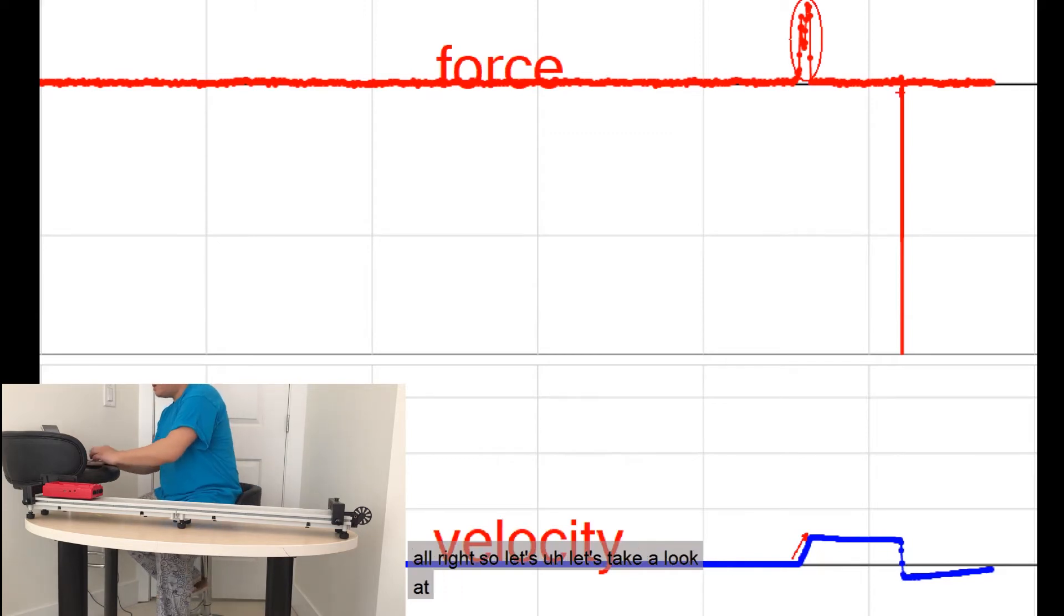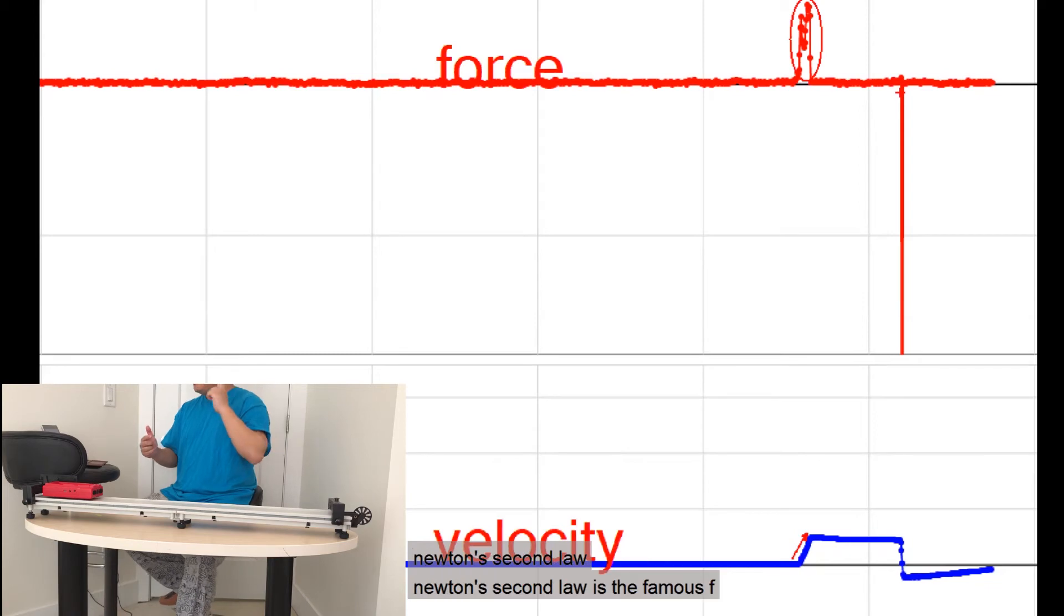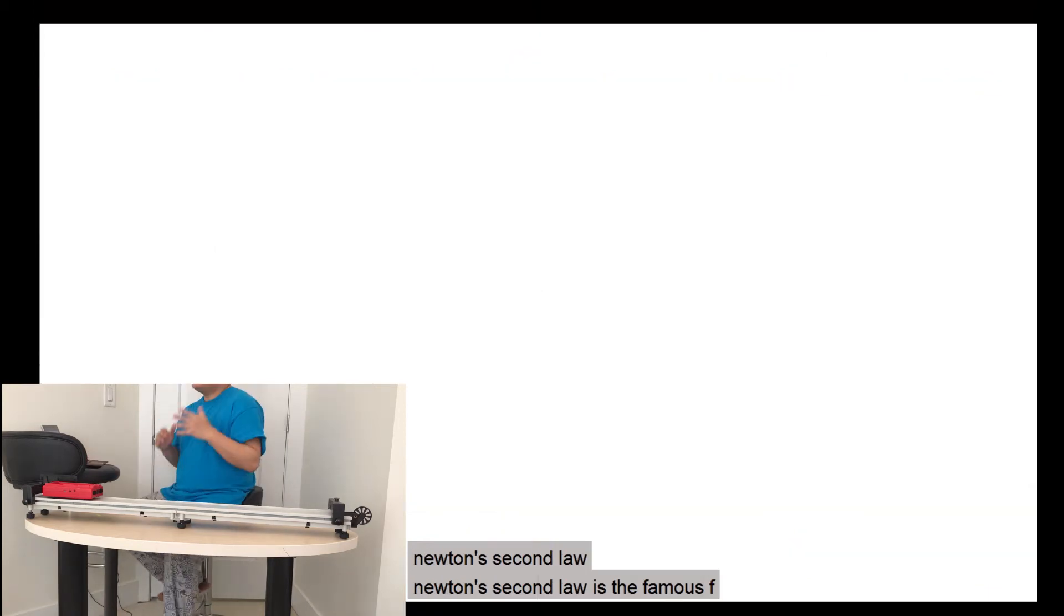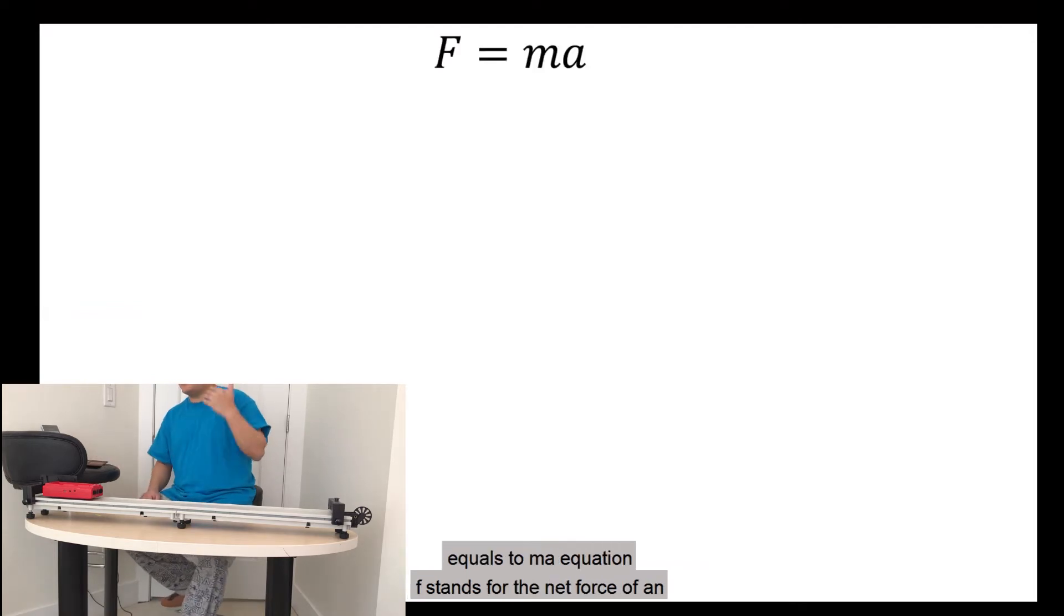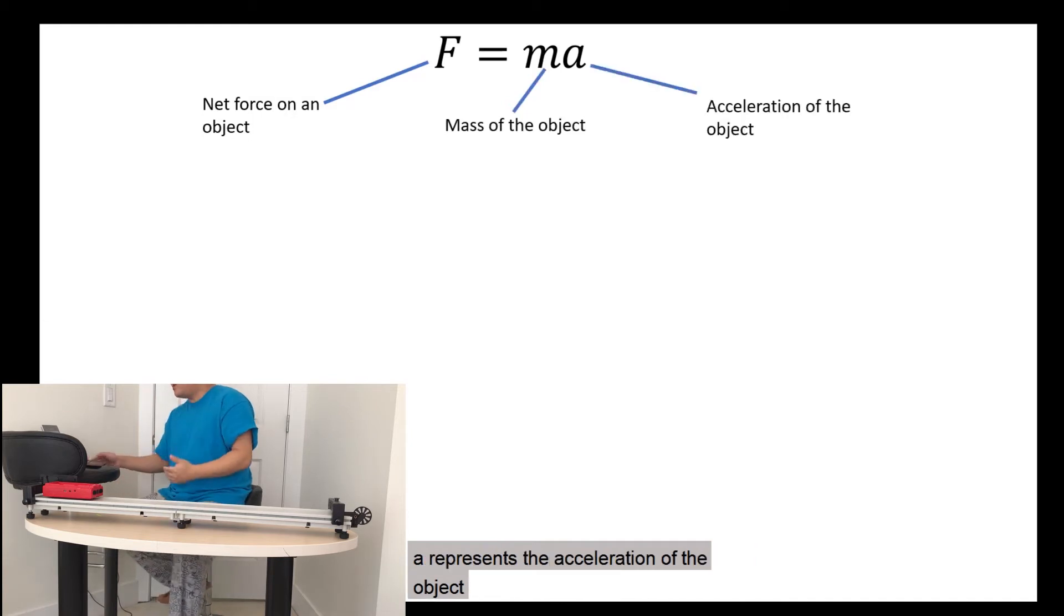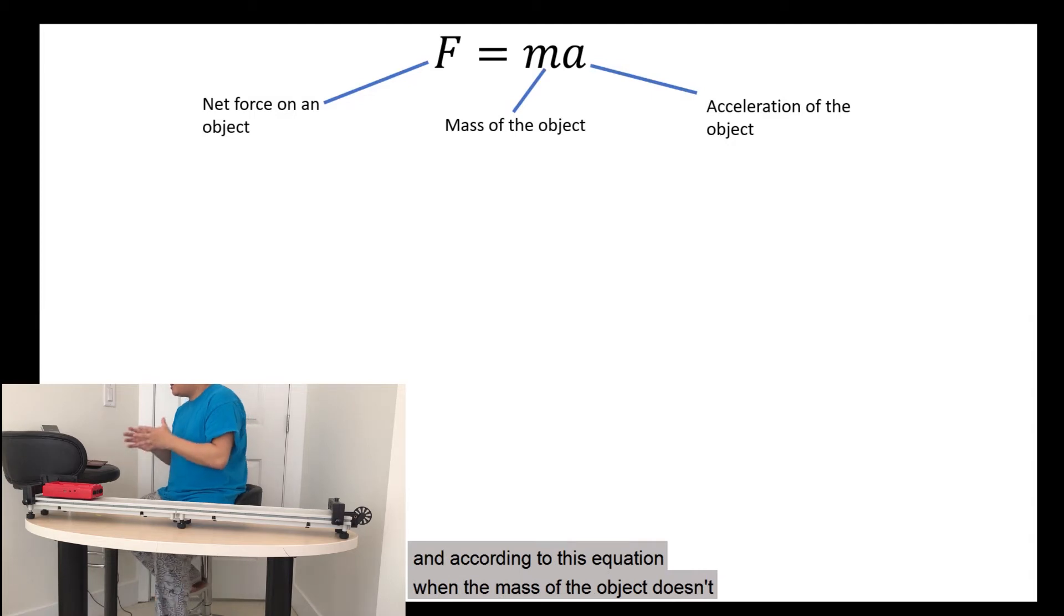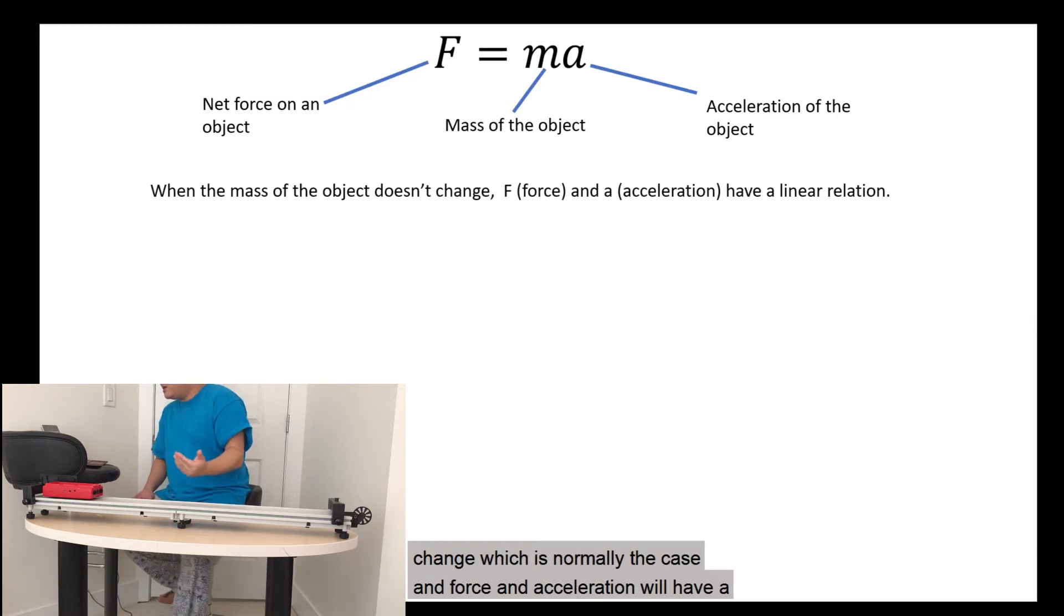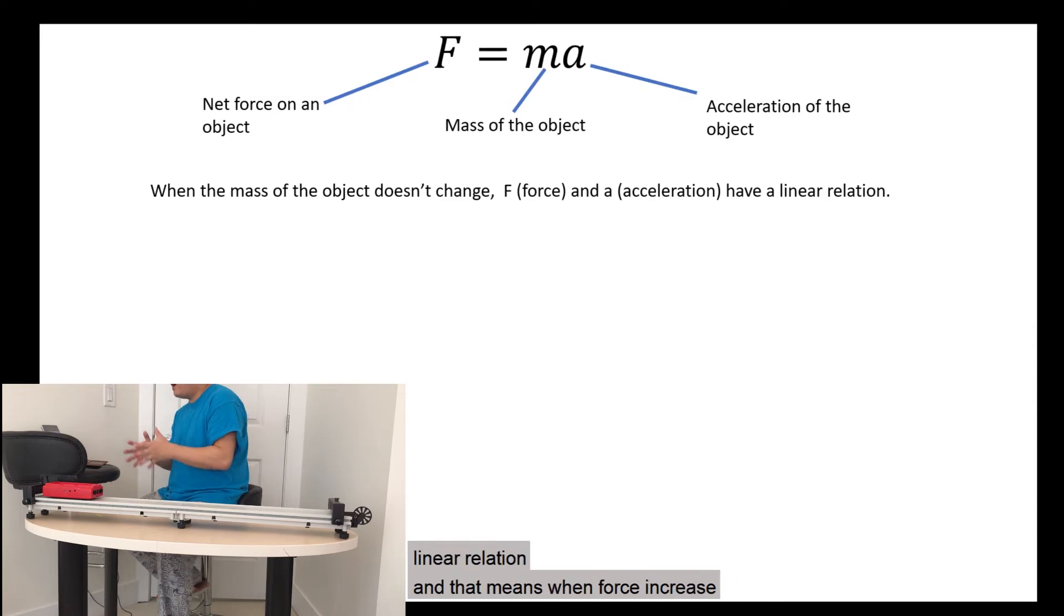So let's take a look at Newton's second law. Newton's second law is the famous F equals to mA equation. Whereas F stands for the net force on an object. M represents the mass of the object. A represents the acceleration of the object. And according to this equation, when the mass of the object doesn't change, which is normally the case, force and acceleration will have a linear relation.